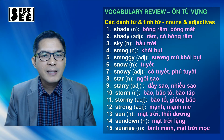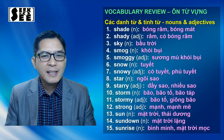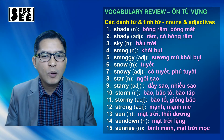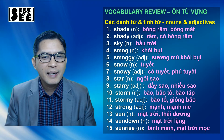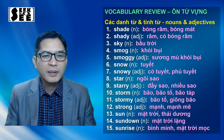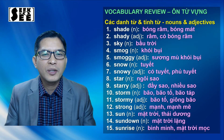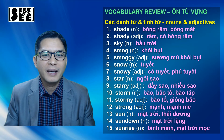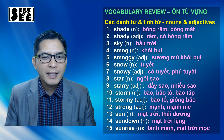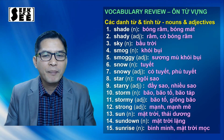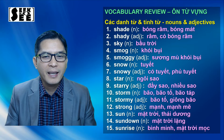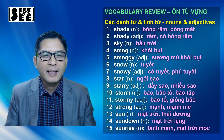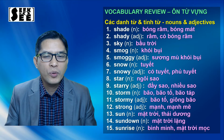Số 3: sky, sky, là bầu trời. Số 4: smog, smog, là khói bụi, tức là bao gồm có sương khói, có bụi, có khí thải rồi đó. Thì cái đó gọi là smog. Rồi số 5, tính từ smoggy, smoggy, là sương mù khói bụi rồi đó.